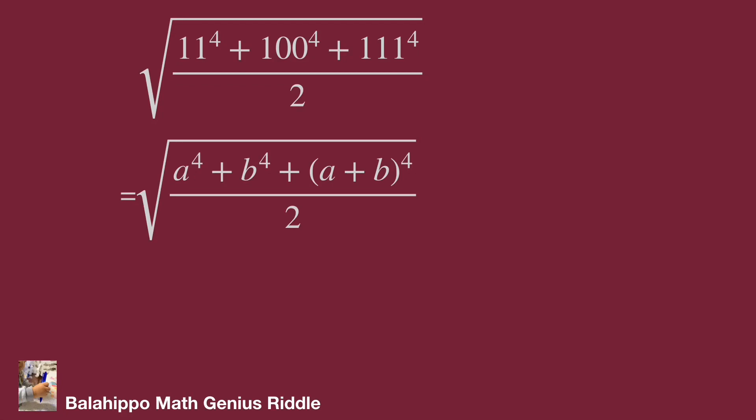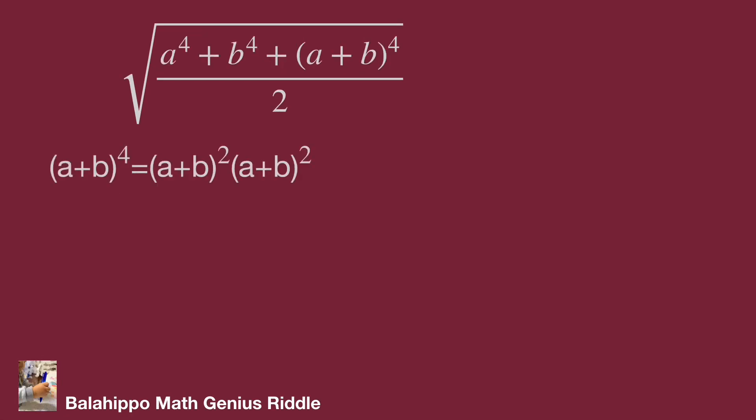Next, to expand (a+b)^4. (a+b)^4 equals (a+b)^2 multiplied by (a+b)^2, equals (a^2 + 2ab + b^2) multiplied by (a^2 + 2ab + b^2).